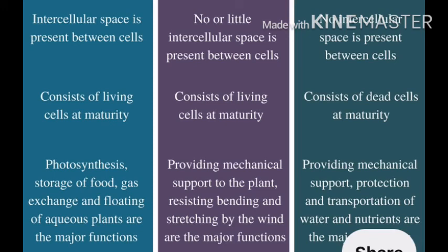Parenchyma consists of living cells at maturity; collenchyma also consists of living cells at maturity; and sclerenchyma consists of dead cells at maturity. Photosynthesis, storage of food, gas exchange and flowering of aquatic plants are the major functions of parenchyma. Providing mechanical support to the plant and resisting bending and stretching by the wind are the major functions of collenchyma. Sclerenchyma provides mechanical support, protection and transportation of water and nutrients — those are the major functions of sclerenchyma.